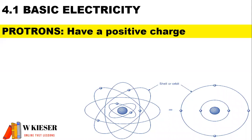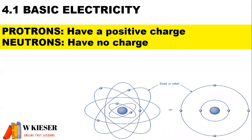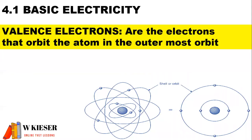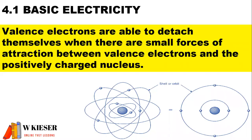4.1 Basic Electricity. Protons have a positive charge. Neutrons have no charge. Electrons have a negative charge. Valence electrons are the electrons that orbit the atom in the outermost orbit. Valence electrons are able to detach themselves when there are small forces of attraction between the valence electrons and the positively charged nucleus.